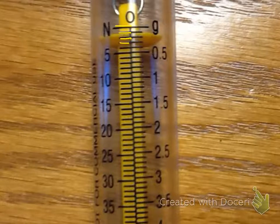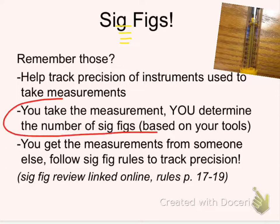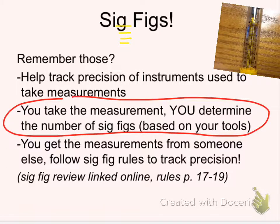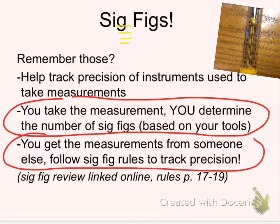It's no longer just about working with the numbers you were given. It's about making sure you've collected the right number of SIGFIGS and kept track of those throughout your calculations. We move to a lot of that in this class, taking your own measurements. We also use practice problems from the book and other sources, and you have to follow the SIGFIG rules to track the level of precision.